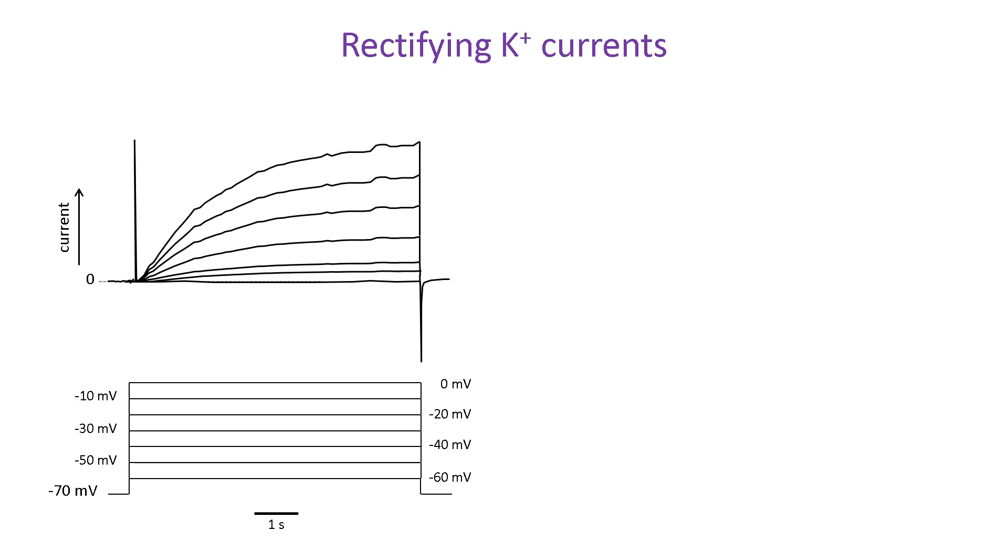Potassium currents like these, which you have already seen, are examples of outwardly rectifying currents. That means that the ion channels prefer to pass outward current and not inward current. The reason they don't pass inward current is that the channels only open above around minus 50 millivolts, where the electrochemical driving force directs potassium ions out of the cell. Voltage-gated ion channels are generally closed at membrane potentials where the driving force might give rise to inward current.